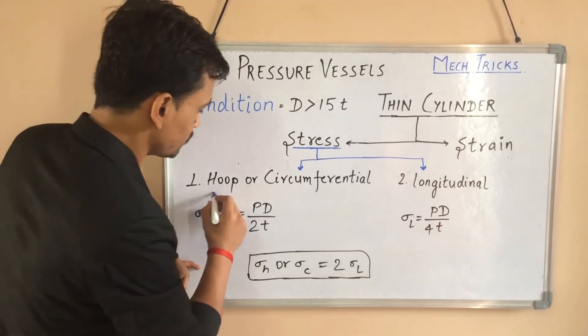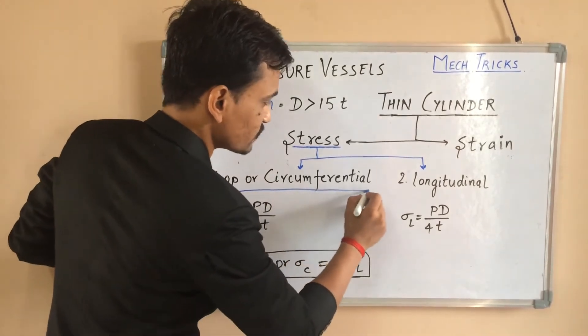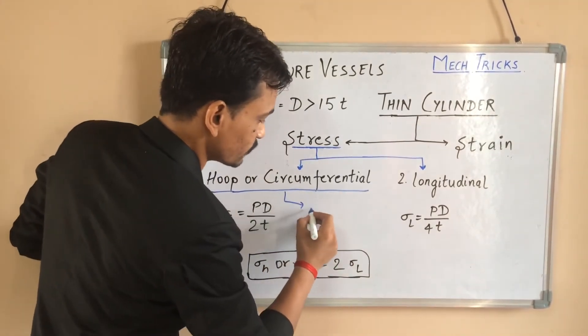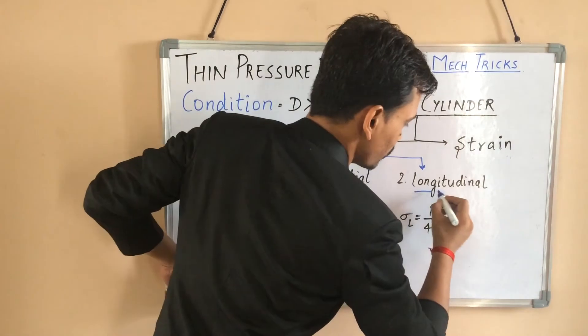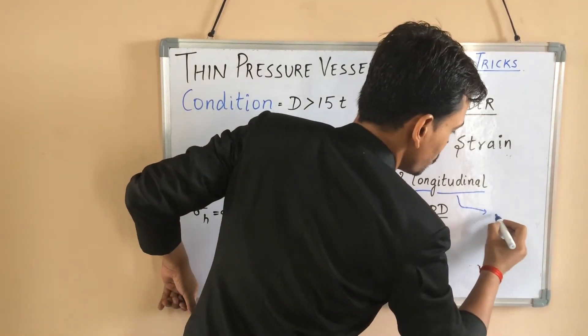Just look at these names. This is hoop or circumferential stress. It has two names. And this is longitudinal stress. It has only one name.